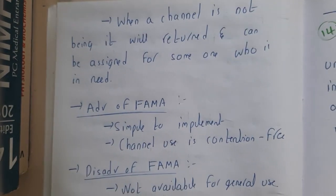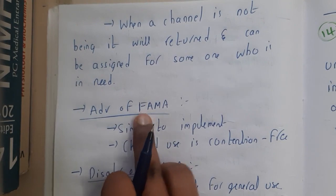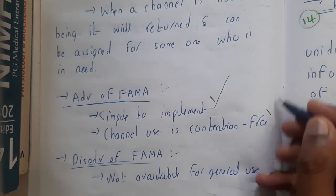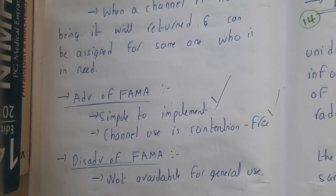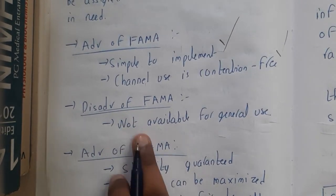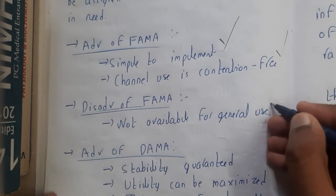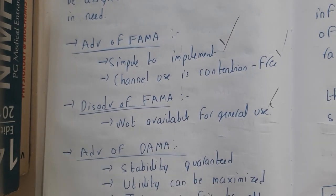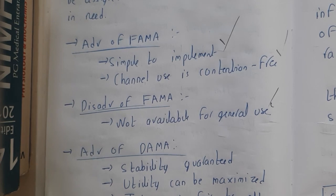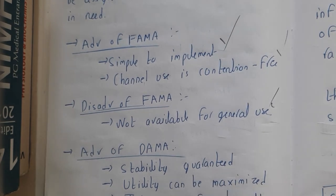The advantages of FAMA are that it is simple to implement and the channels are 100% free. The major disadvantage is that the channel is not available for general use — you cannot apply FAMA for other satellites. FAMA is widely used for TV satellites like dish TV connections.